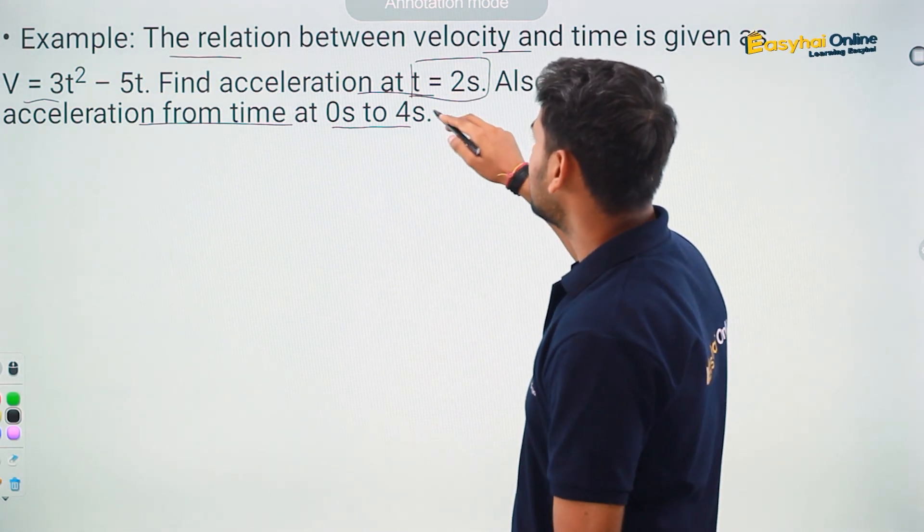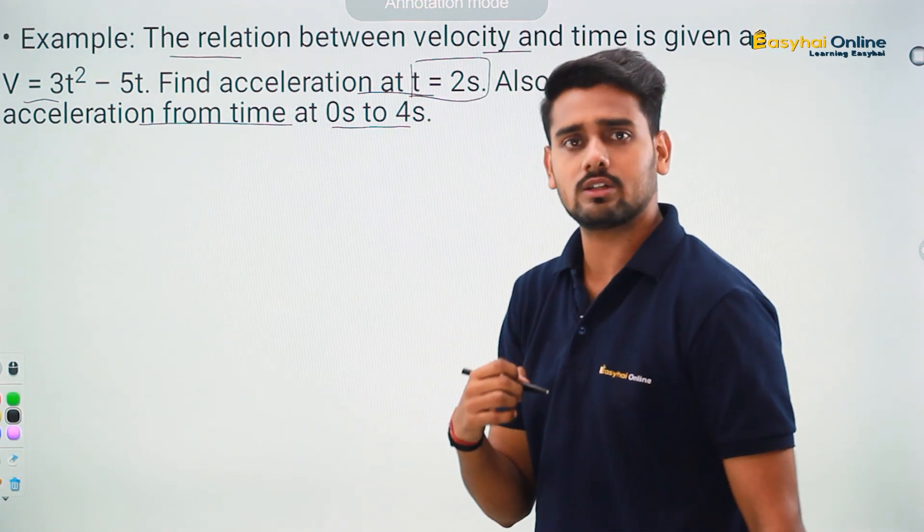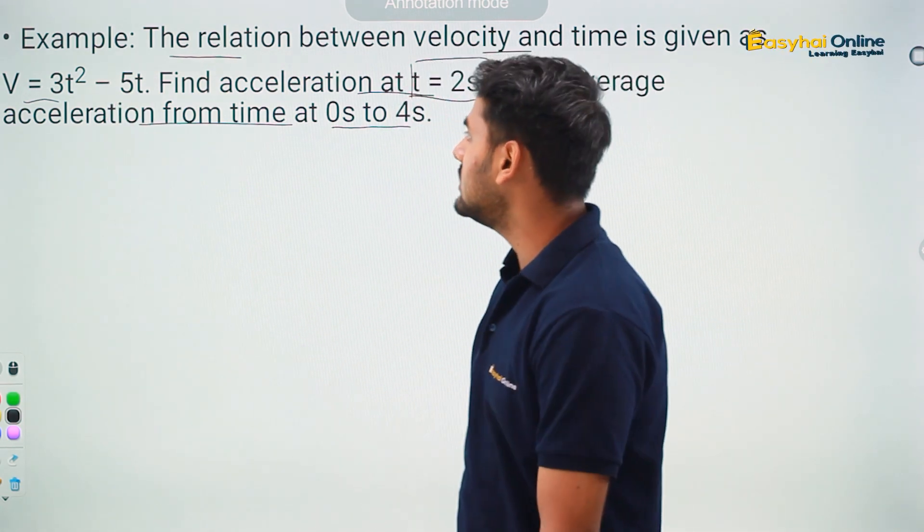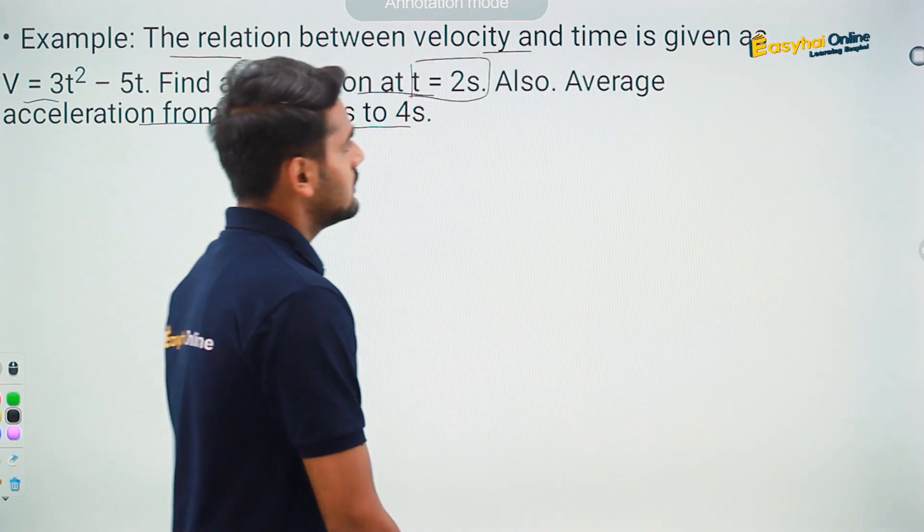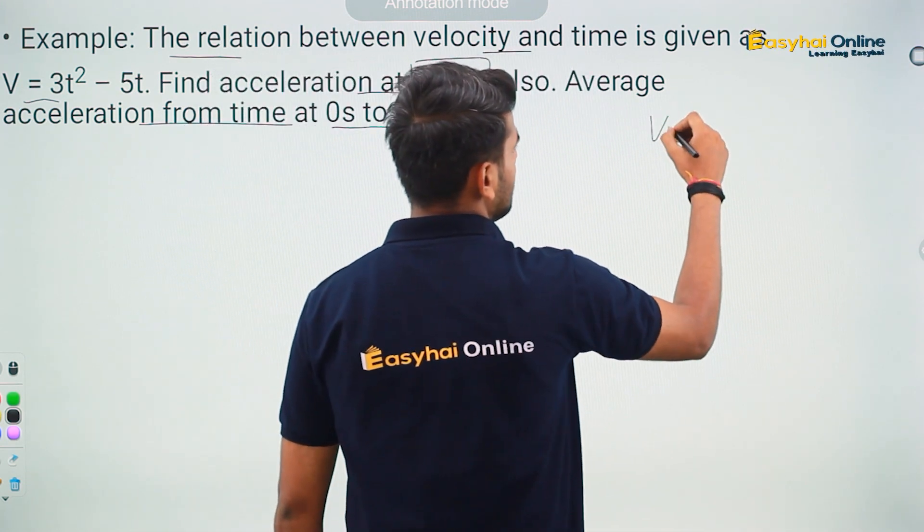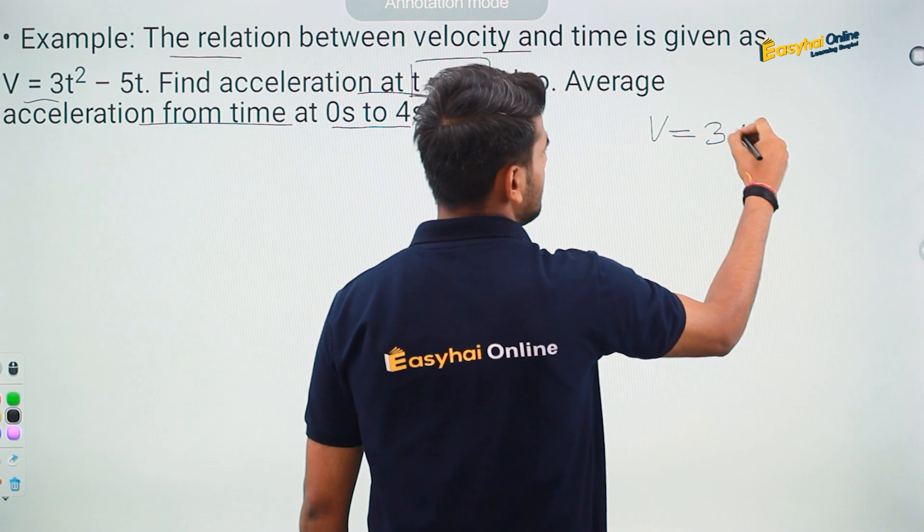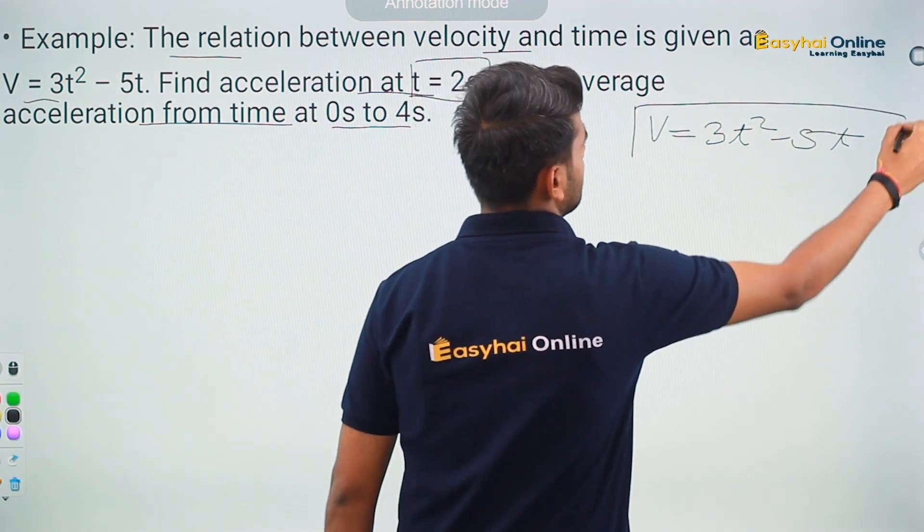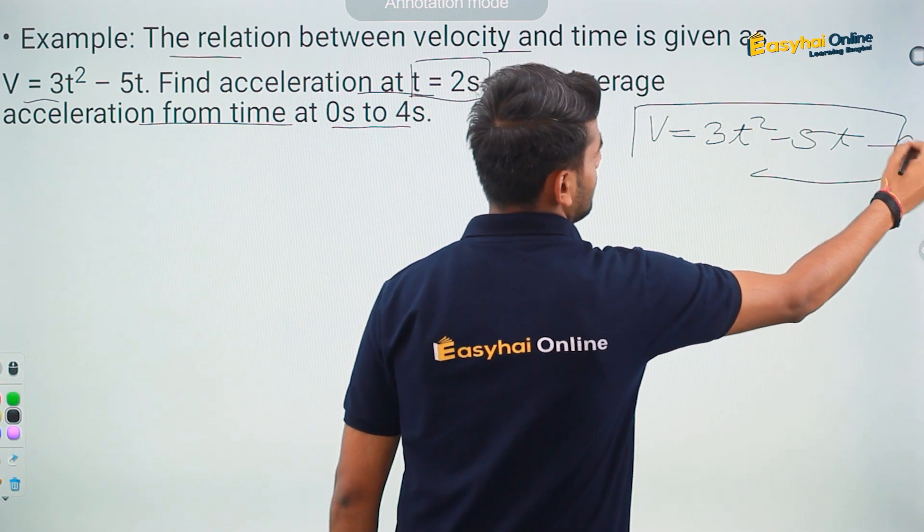First of all, let us see what exactly is going to be the instantaneous acceleration at time t equal to 2 seconds. The question here says v equals 3t square minus 5t. Let me write over here: v equals 3t square minus 5t. This is your velocity which is equation 1.